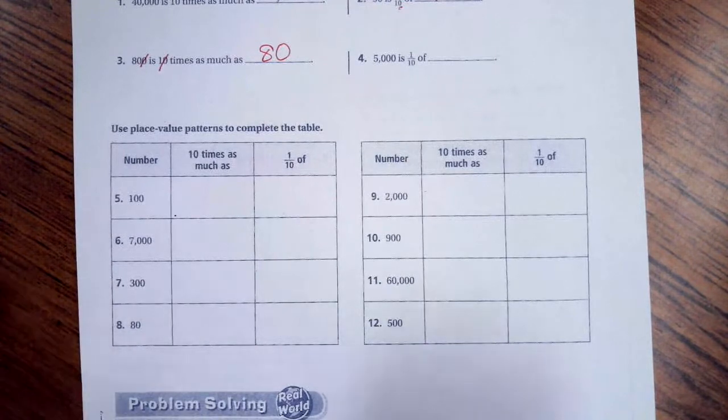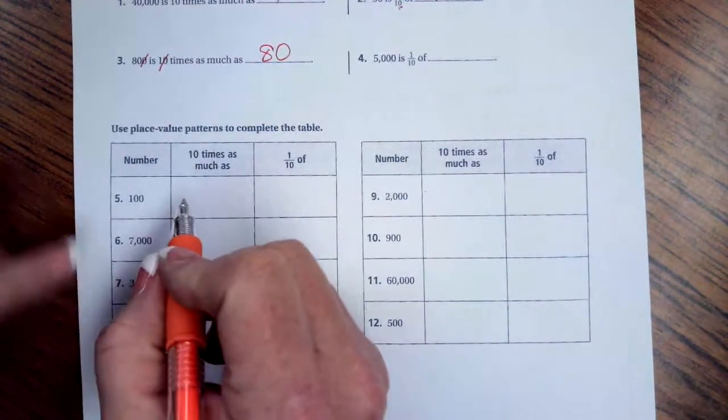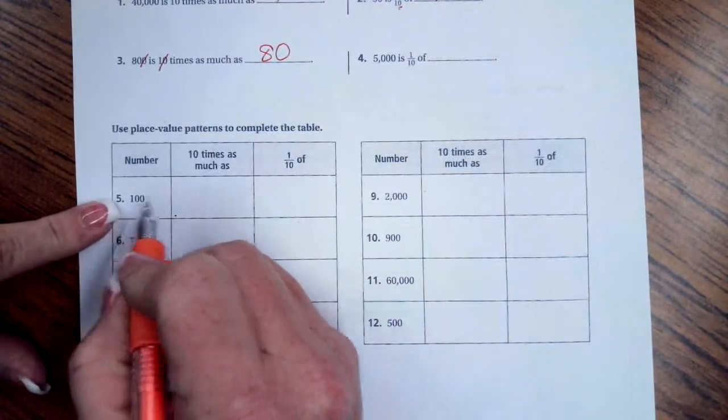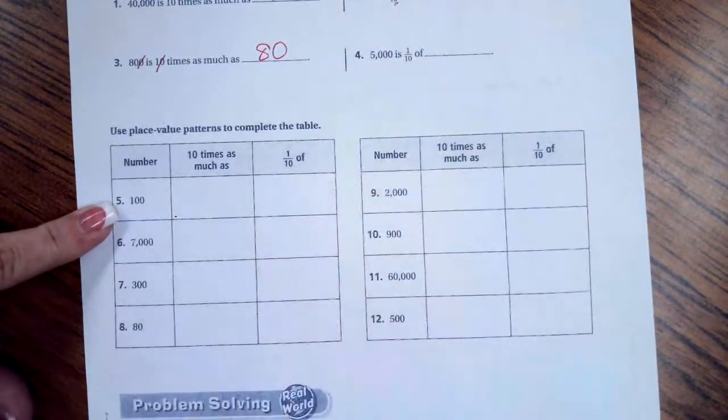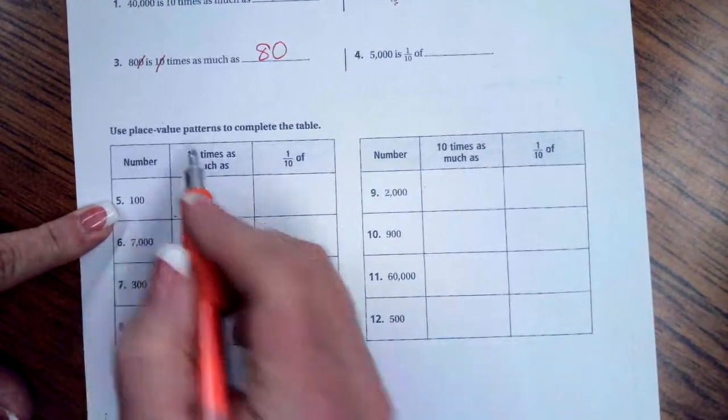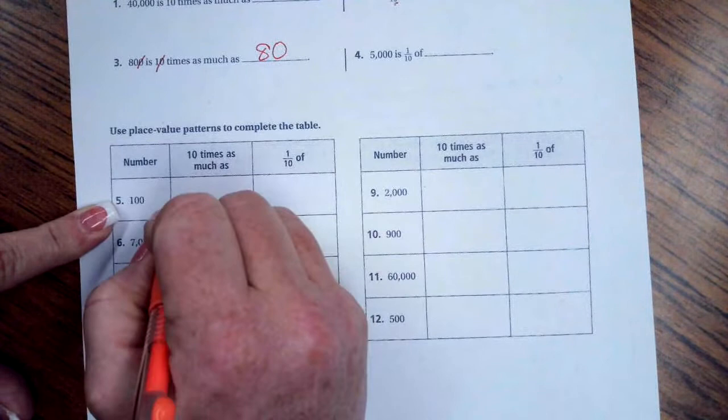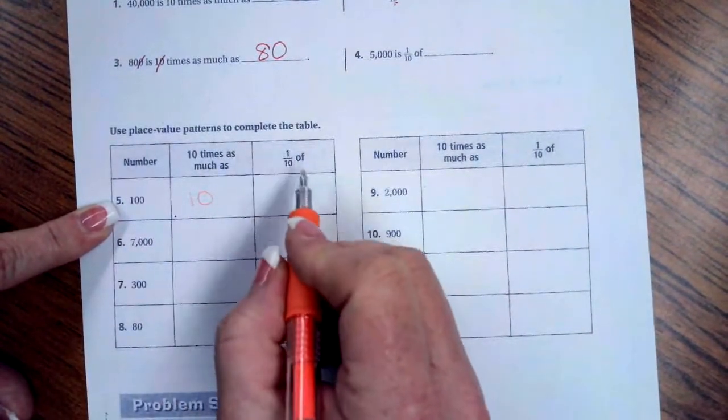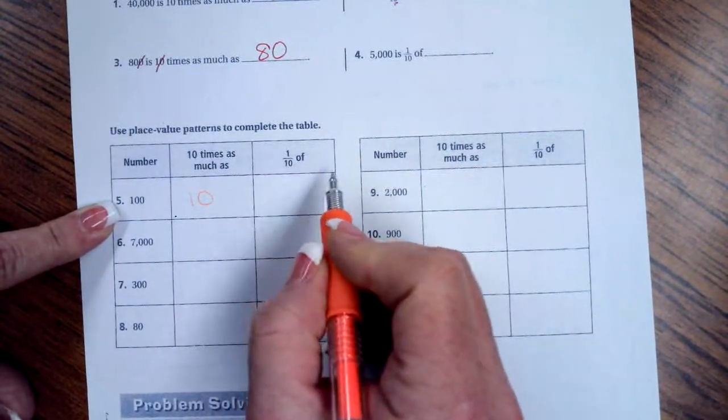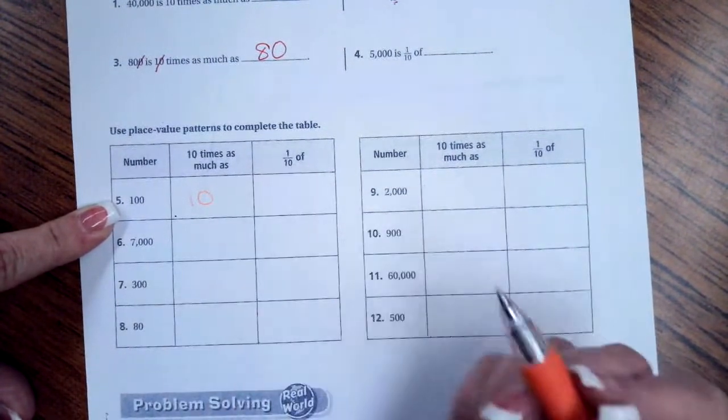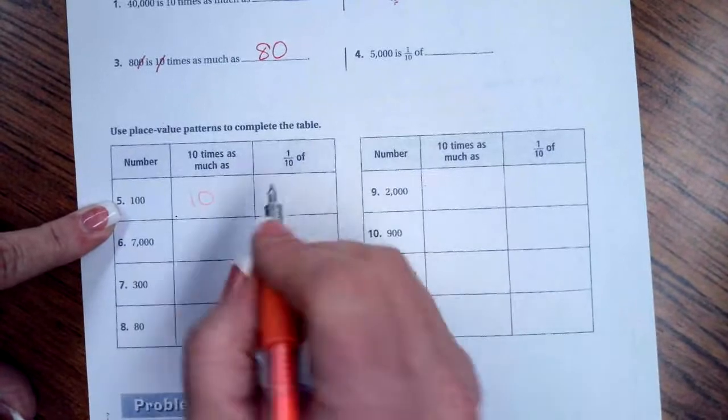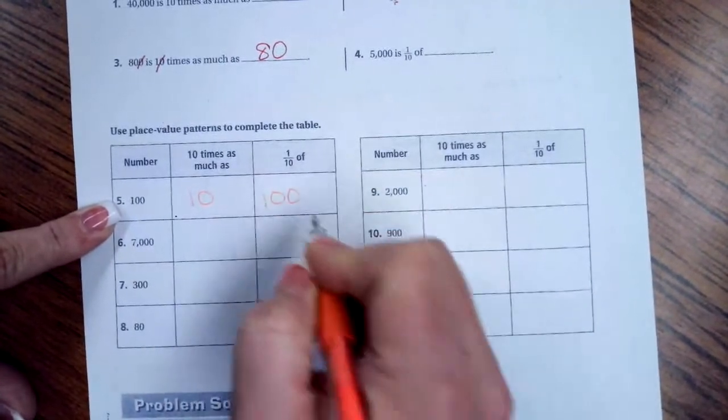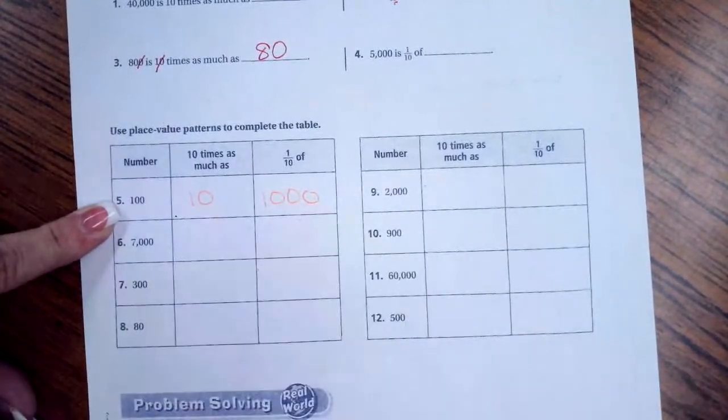So, we want to know what 100 is 10 times as much as what number? Well, one zero again. I'm going to take off one zero. That gives me a 10. Now, on the other side of that, it's one tenth of, which means there's still one zero, so I'm going to add a zero. So I have my 100, and then I add a zero.